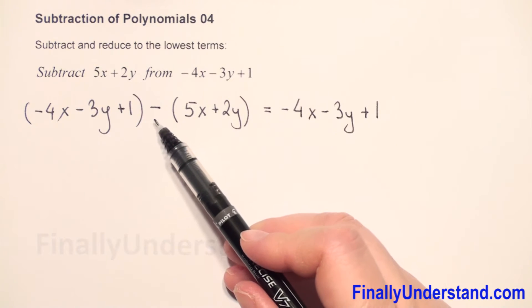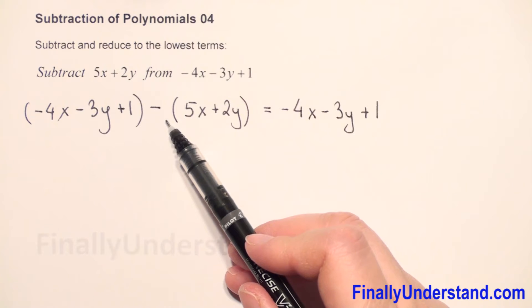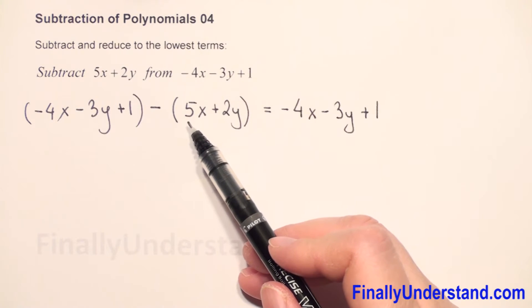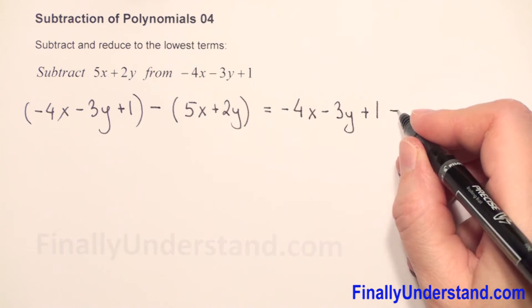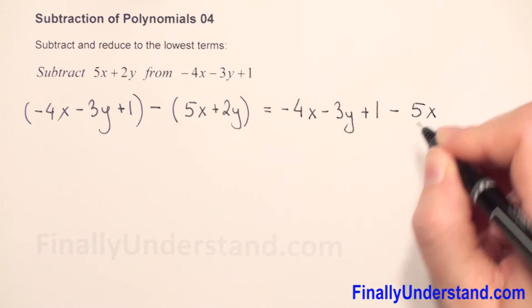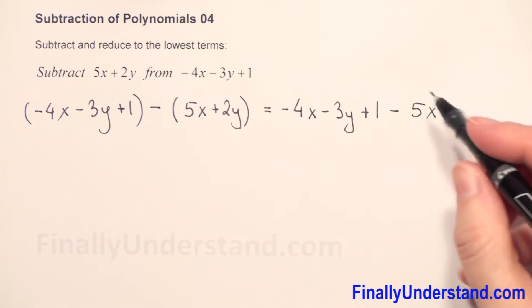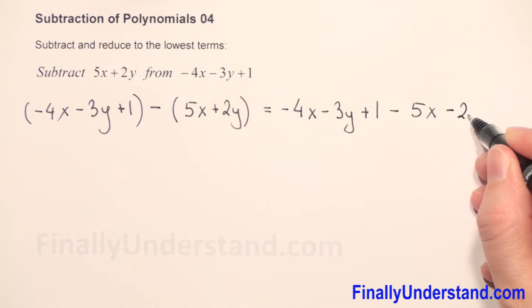Next, because we have a negative sign before the parenthesis, we have to change both signs. 5x is positive so now it will be negative, and 2y is positive so now it will be negative also.